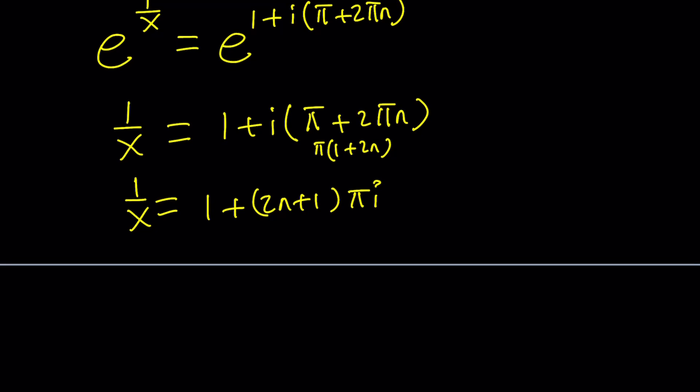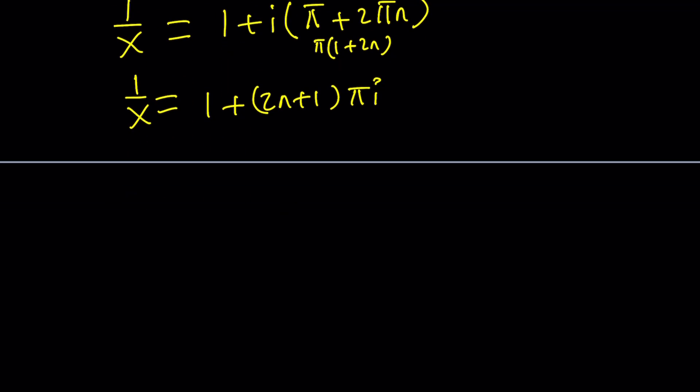So now we do need to use the reciprocal function because 1 over x is what we have. We're looking for the reciprocal of that which means the reciprocal of the reciprocal is the function itself or the expression itself. So x is going to be 1 over 1 plus 2 n plus 1 pi i. Obviously you could leave it at this point but the problem is you need to get rid of the i at the bottom.